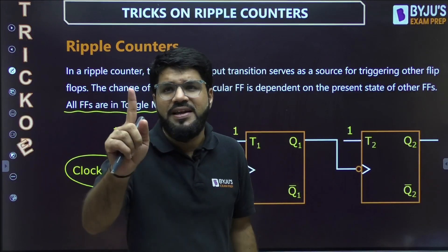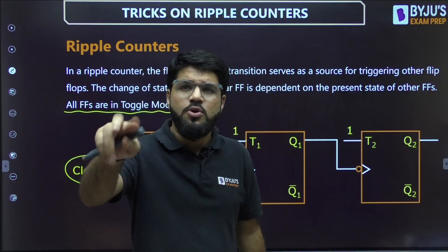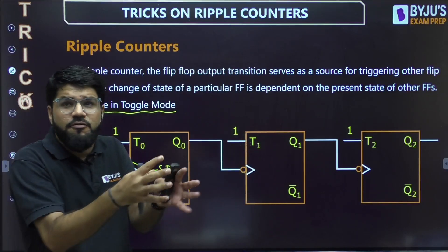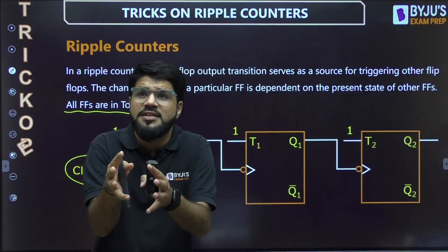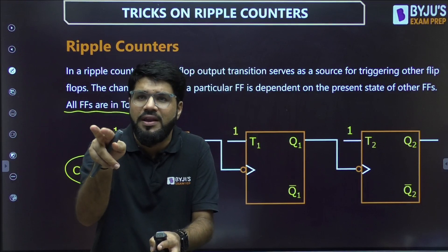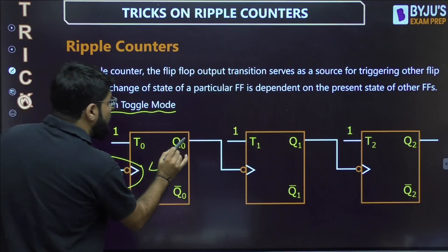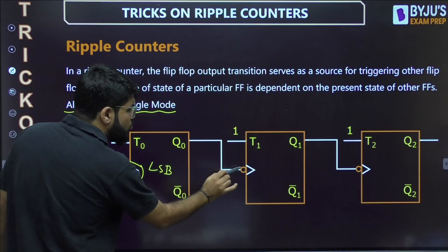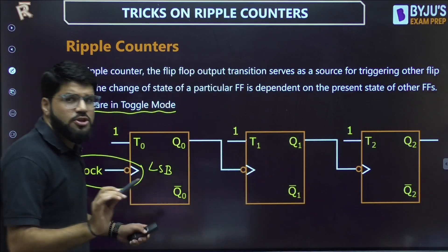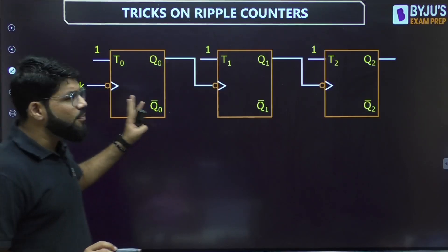Very importantly, all flip-flops are in toggle mode. For a T flip-flop, toggle mode is when T equals 1, because when T equals 1 the next state is toggled. Similarly, if designing using a JK flip-flop, both J and K equal 1 for toggle mode. The output of each flip-flop goes to the next clock input, and so on.